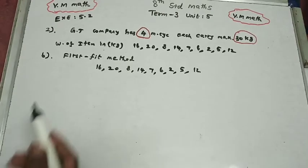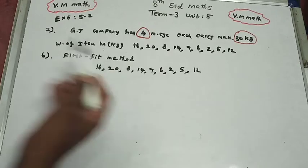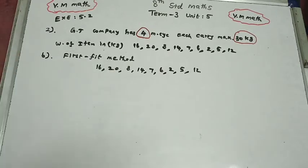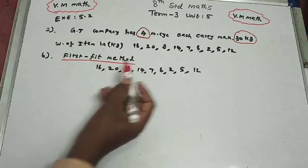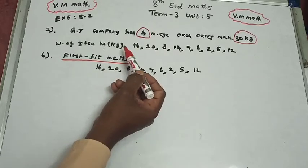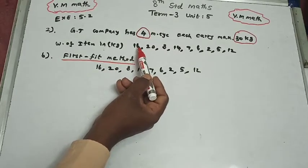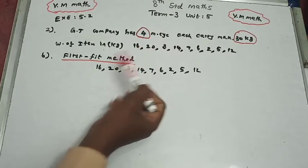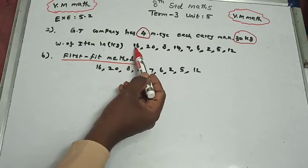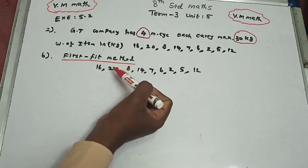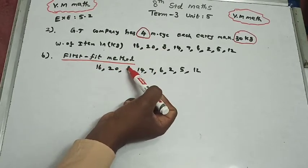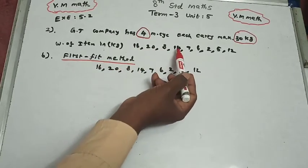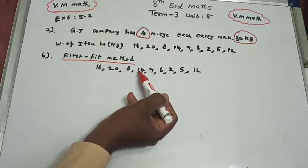Question B, first method. We list the items: first item 16 kg, second 20 kg, third 8 kg, fourth 14 kg, and continuing with the remaining items.